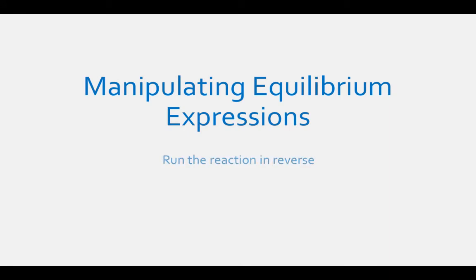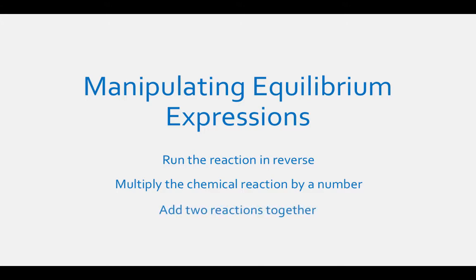In this video we will discuss three ways to manipulate equilibrium constant expressions. The first method is if we run the reaction in reverse. The second technique is if we multiply the chemical reaction by a number. The third way is if we add two different reactions together.